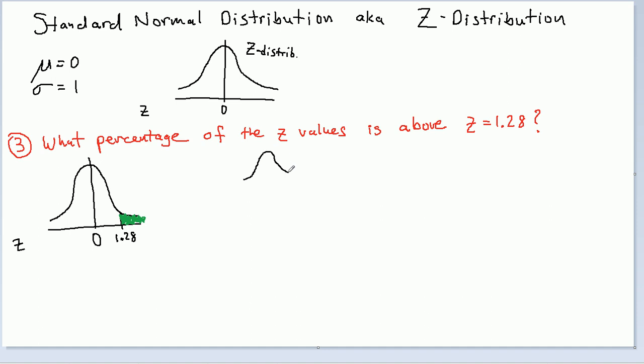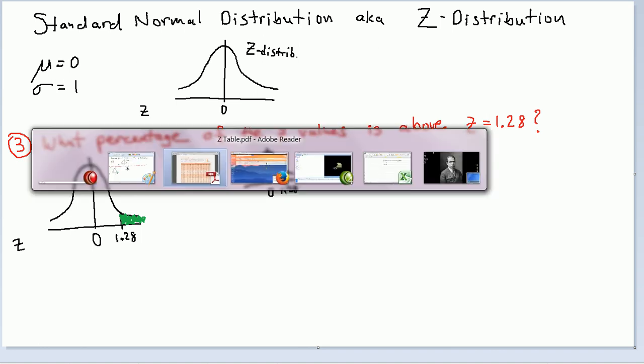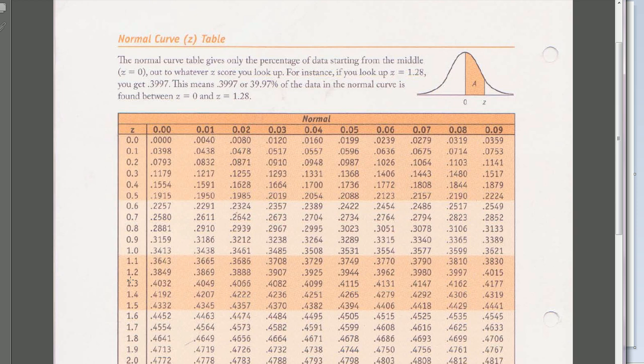Since our table gives us the area from 0 to some number, to some z value, and in this case, 1.28. If we looked up 1.28, what we would get would be this. Okay, let's look up 1.28. Here's 1.2, and here's 0.08. And the number we're getting here is 39.97%. Remember, this picture always reminds you what this number, 3997, is. That's saying from 0 to 1.28 is 39.97%, okay?